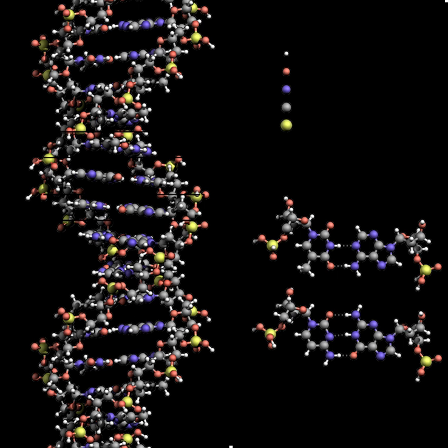DNA is a long polymer made from repeating units called nucleotides. The structure of DNA is dynamic along its length, being capable of coiling into tight loops and other shapes. In all species it is composed of two helical chains bound to each other by hydrogen bonds. Both chains are coiled around the same axis and have the same pitch of 34 angstroms. The pair of chains has a radius of 10 angstroms.